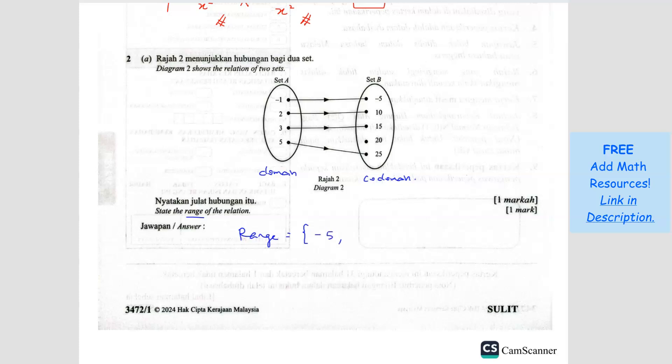So it will be negative 5, 10, 15, and 25. We are not going to take 20 because 20 has got no object. There's nothing connected to 20. So this will be your answer.